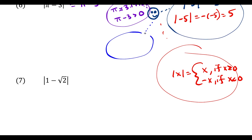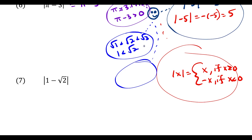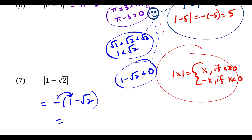For the next question, compare one and square root two: we know one is less than square root two, so one minus square root two is less than zero. We're taking the absolute value of something less than zero, so to get rid of the absolute value, we throw a minus in front of the inside. That gives us minus one minus square root two. Distributing the negative, we get negative one plus positive square root two, which simplifies to square root two minus one.